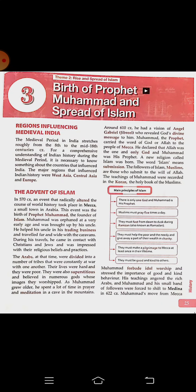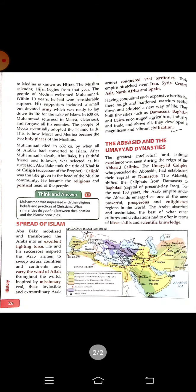Prophet Muhammad and his followers moved from Mecca to Medina, and this migration is known as Hijrat. The Muslim calendar, Hijri, begins from that year. The people of Medina welcomed Muhammad and his followers. Within ten years, he had won considerable support, including a small but devoted army who were ready to sacrifice their lives for Islam.